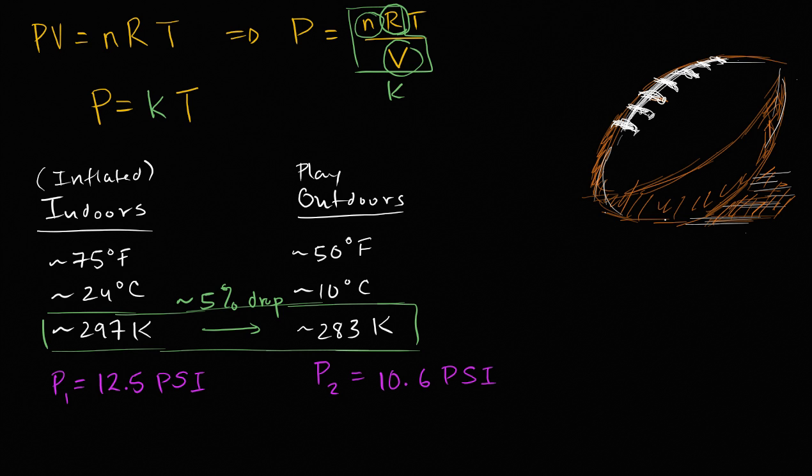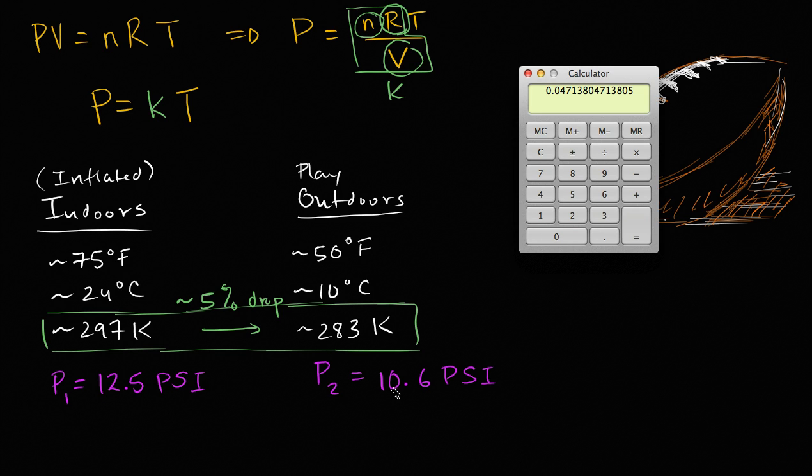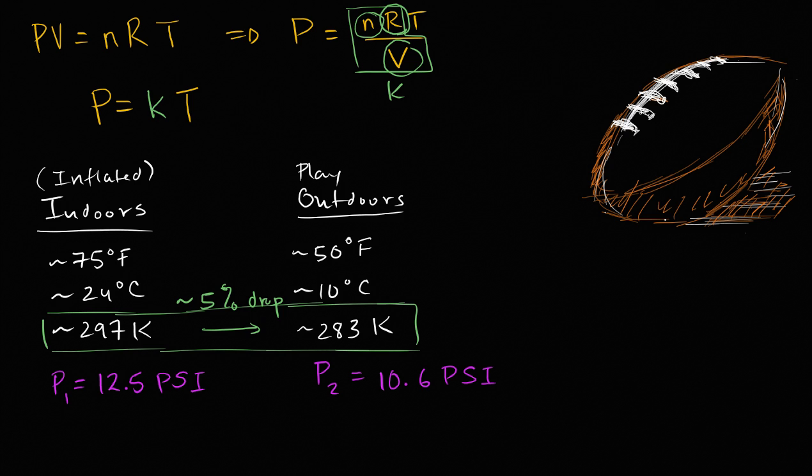Now I'll see what the drop in pressure is. So this is going from 12.5 PSI to 10.6 PSI. That's a 1.9 PSI drop. So 1.9 PSI drop divided by our start, which is 12.5, which looks like a 15.2% drop, or roughly a 15% drop. So things are starting to look shady. This looks like a 15% drop. And this is actually what some of the initial analyses did. And they said, oh look, something clearly shady happened because temperature by itself should only account for a 5% drop in pressure, but there was a 15% drop in pressure. So maybe some air was let out somehow.